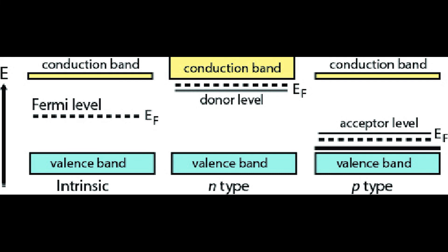When an impurity is added to a pure semiconductor, extrinsic semiconductors are formed. There are two types of extrinsic semiconductors: P-type and N-type. When a trivalent impurity is doped to a pure semiconductor, a P-type semiconductor is formed. When a pentavalent impurity is doped to a pure semiconductor, an N-type semiconductor is formed.